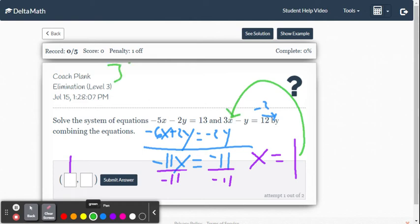So we're going to get 3 times 1 minus y equals 12. Everything else stays the same. All I did is I replaced the x with 1. 3 times 1 is 3. So I got 3 minus y equals 12.